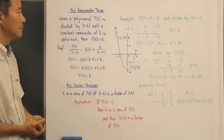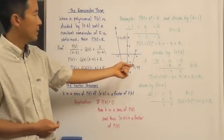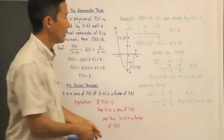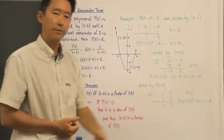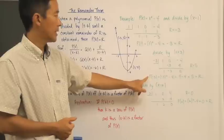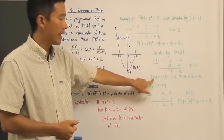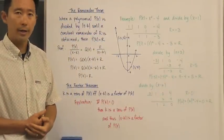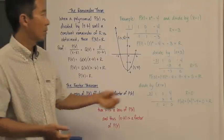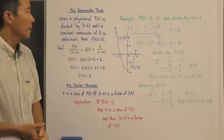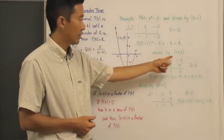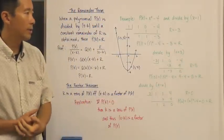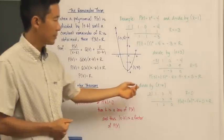Let's do another one. If we divide by x plus 3, using synthetic division, the remainder comes out to 5. If we evaluate the polynomial at x = negative 3, we get the value of 5, which is the remainder when we divide the polynomial by x plus 3.